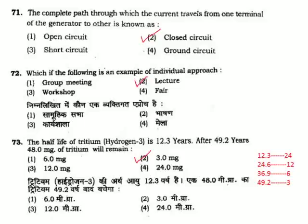Question 73: Half-life of tritium is 12.3 years. After 49.2 years, 48 mg of tritium will remain — in 12.3 years, 48 mg of tritium will be halved. The correct answer is Option 2.